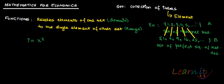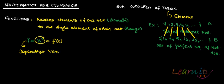So this function relates each element of one set — the domain — to a single element of the other set — the range. This can also be written as f(x). Here y is called the dependent variable because it depends on the value of x. If x = 1, y = 1; if x = 2, y = 4. x is the independent variable.